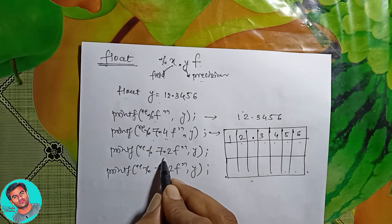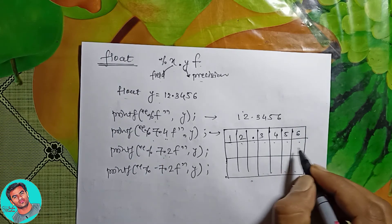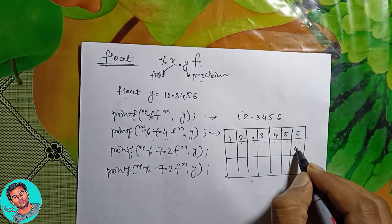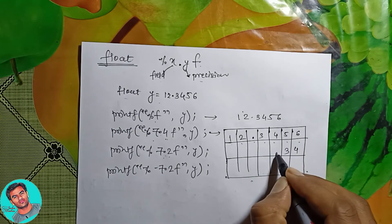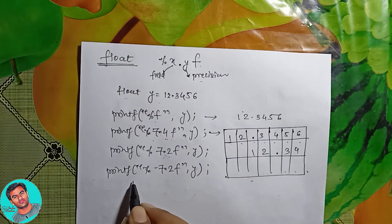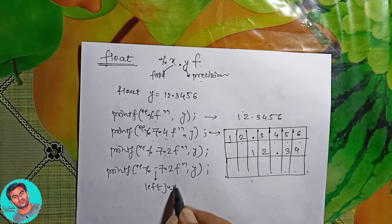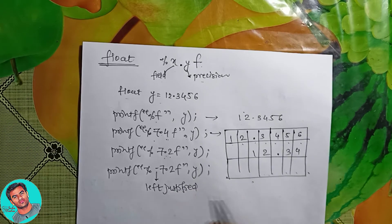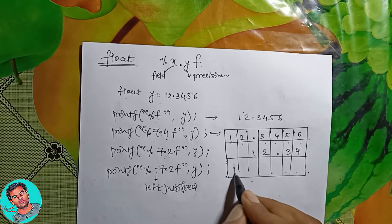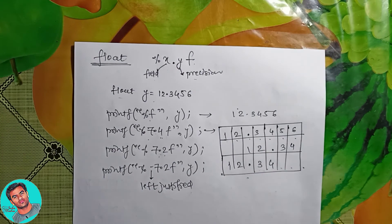For %7.2f, after the decimal point we need only 2 values, so the output is 12.34. For %-7.2f, the minus represents left justification, so it prints the output value starting from the left side of the field.